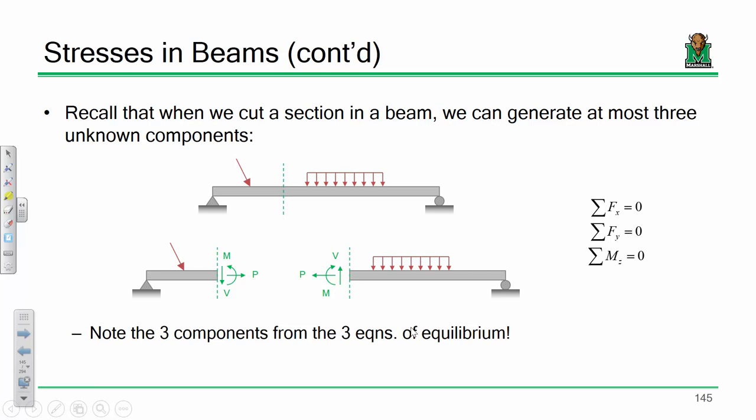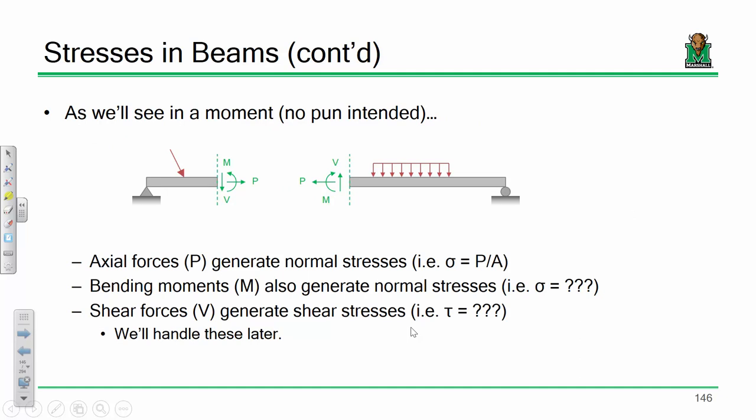We've spent the last bit basically trying to understand how V and M get distributed on a beam — that's what a shear diagram and moment diagram is. Each of those internal loads can generate a stress. Axial load P generates normal stress — sigma equals P over A. Bending moments generate stresses, and shears generate stresses. We're going to handle the shear stresses off to the side; I want to talk about that bending stress first.